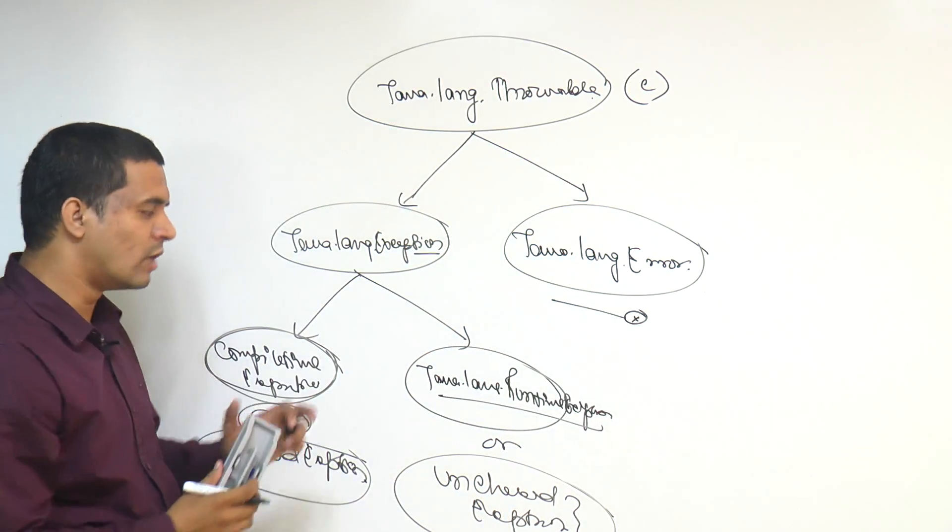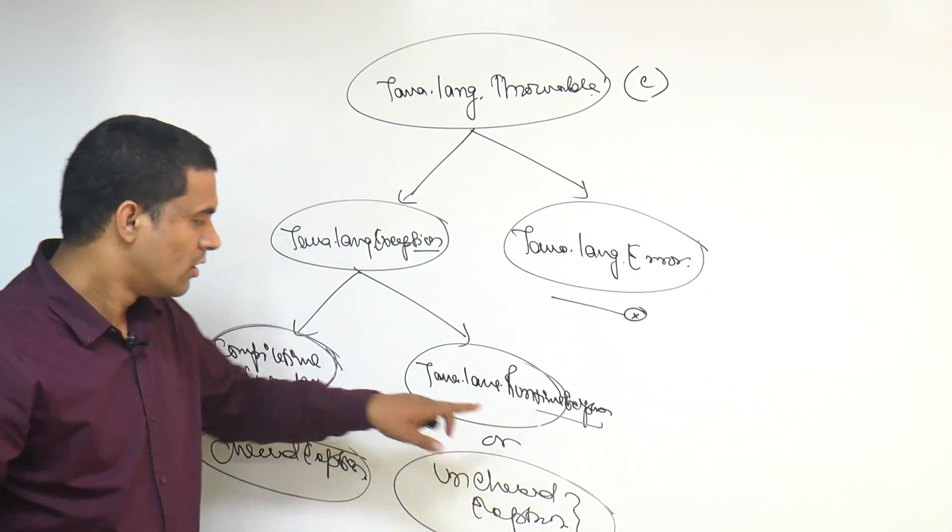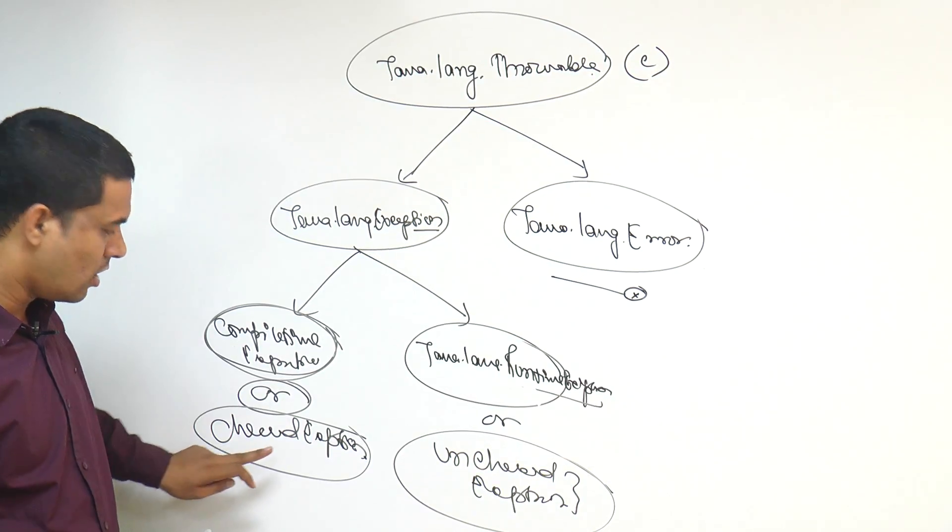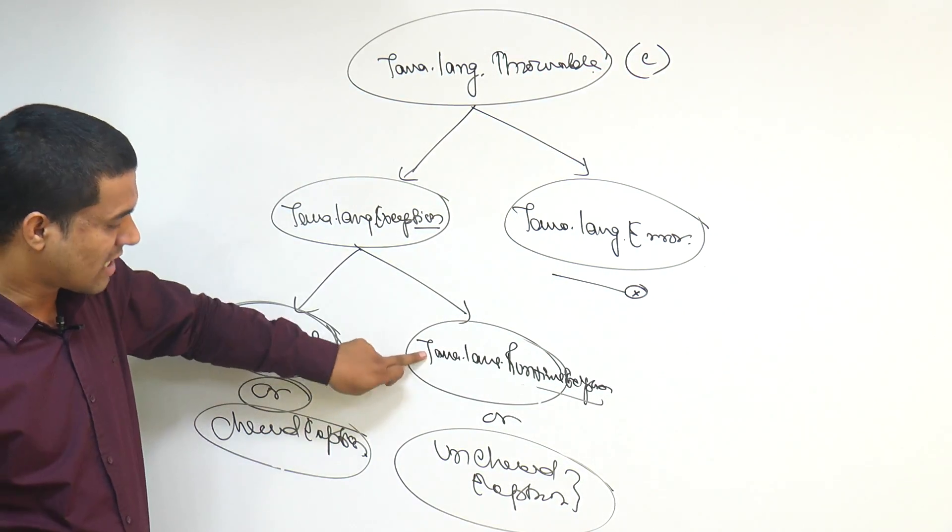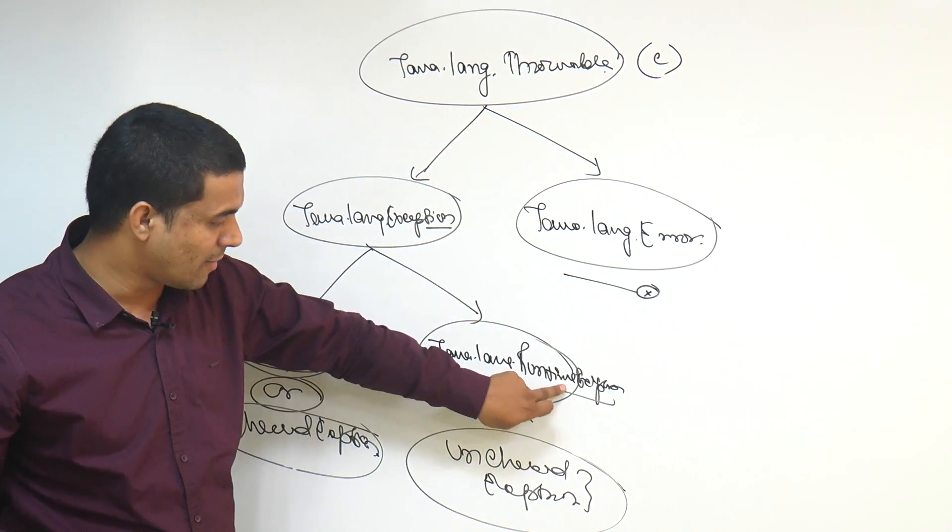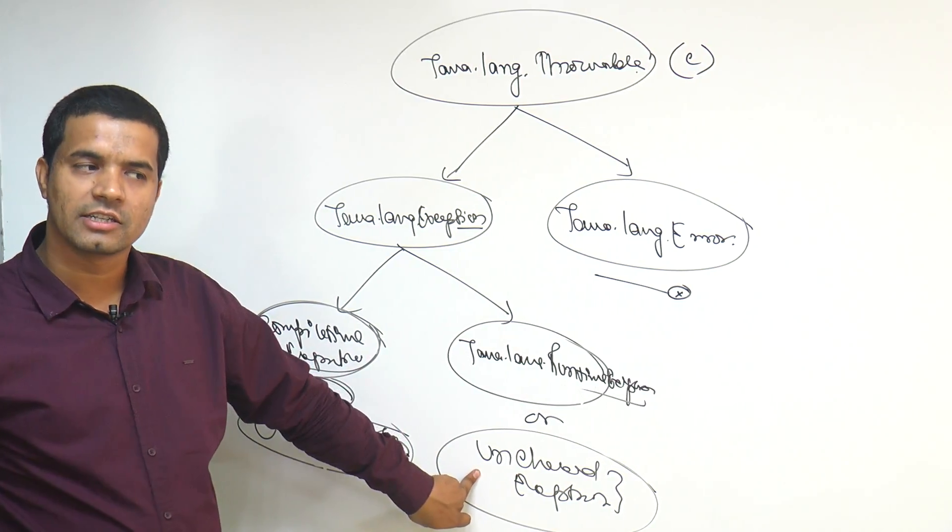These two things are very important. One is the compile time exception or checked exception. Second one is the java.lang.RuntimeException or the unchecked exception.